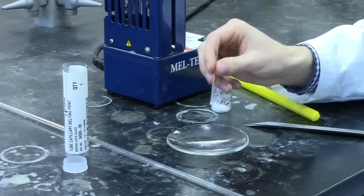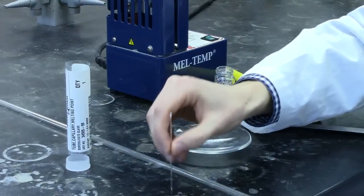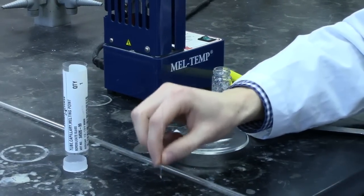Once you have some of the fine sample in the end of your tube, you'll gently tap it on the bench to bring it down into the bulb of the capillary tube.